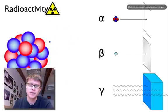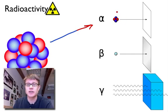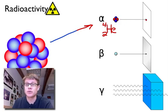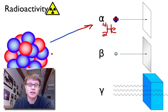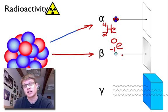Alpha decay is simply two protons and two neutrons given off. Without electrons, this is essentially a helium nucleus — helium has two protons and a mass number of four. Alpha decay can't even move through a piece of paper, so it's the weakest in terms of penetrating power. Beta decay is essentially an electron, which has a minus one charge and negligible mass.